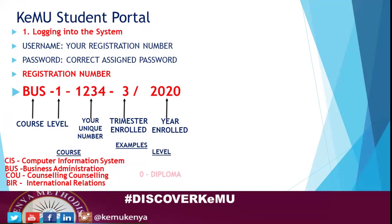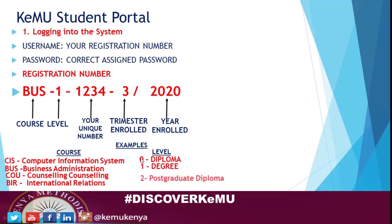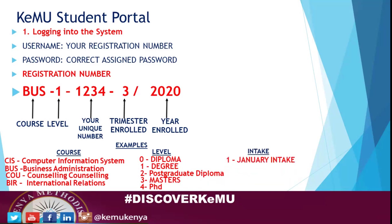The level codes are: zero for diploma, one for degree — most of you are doing degree — two for postgraduate diploma, three for Masters, and four for PhD. Then comes the intake: those who came in January have one stroke 2020, those who came in May have two stroke 2020, and those who came in September have three stroke 2020.